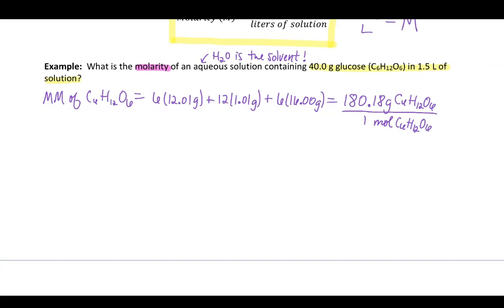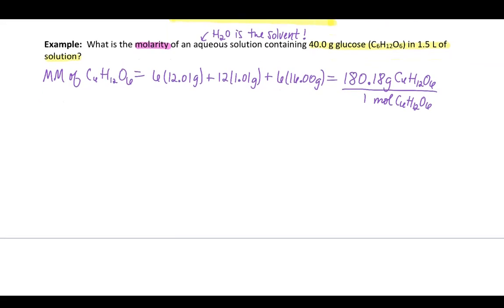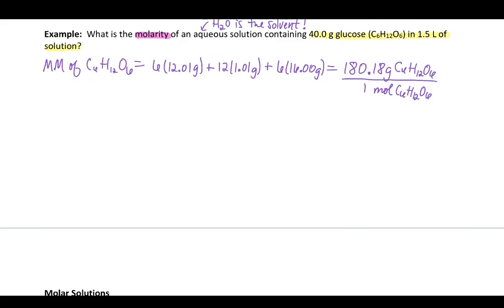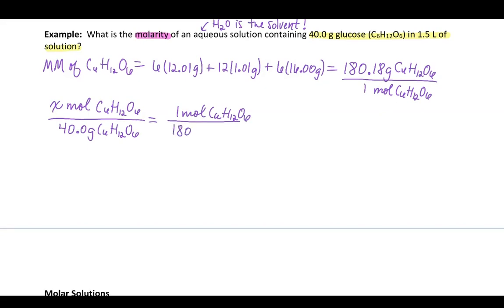Let's go ahead and do the math here. It should give me 180.18 grams of C6H12O6 for every 1 mole. So I'm going to write that as a proportion, and then I can set this up to find my number of moles. If I'm looking for how many moles there are of glucose, C6H12O6, in 40.0 grams, I'm going to set up my proportion to find my moles.